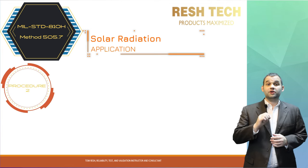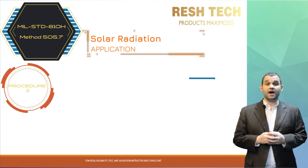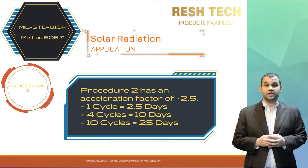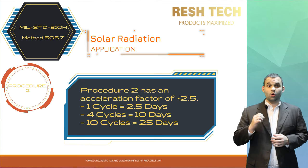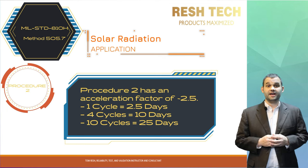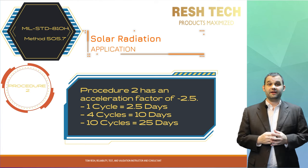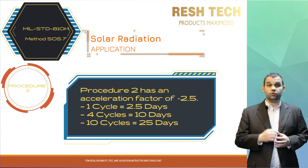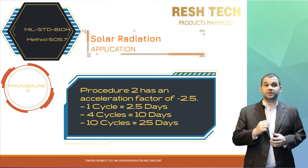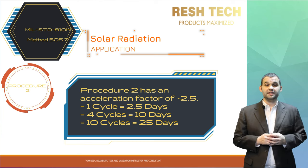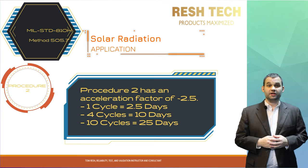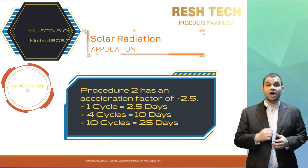Let's jump into Procedure 2. A cool tidbit: Procedure 2 has an acceleration factor of approximately 2.5 as far as total energy received by the test item is concerned. One 24-hour cycle as shown in Figure 505.7-2 produces an acceleration factor of 2.5 times the solar exposure in one 24-hour diurnal cycle, plus a four-hour period with the spectral lamps turned off to simulate the thermal cycling that would occur after the sun has set and the system starts to cool down.